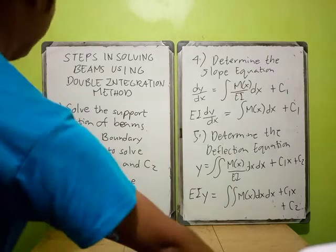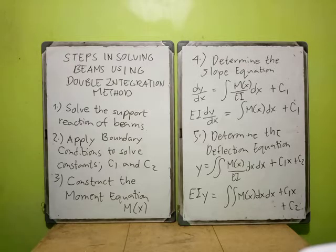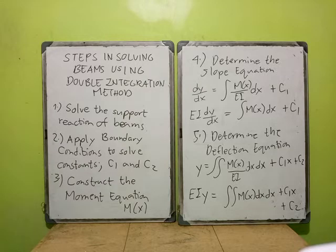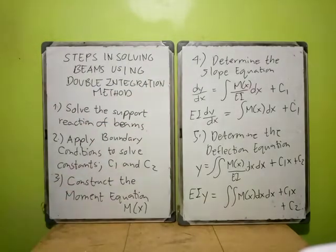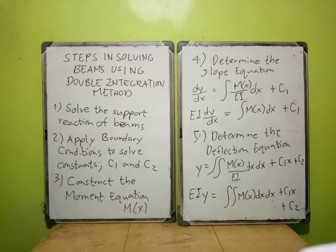Okay, so let's proceed. Just a review from the past video: these are the steps in solving beams when using the double integration method. We do these steps in order to determine the slope and the deflection. Through the slope equation and the deflection equation, you will be able to compute the slope and the deflection respectively at any point X on your beam.